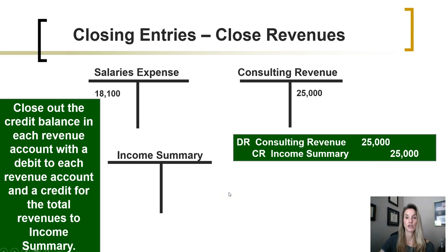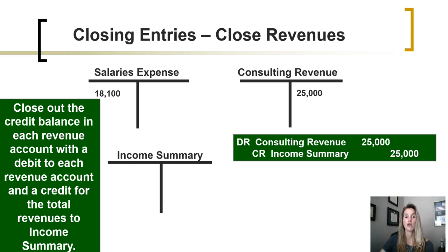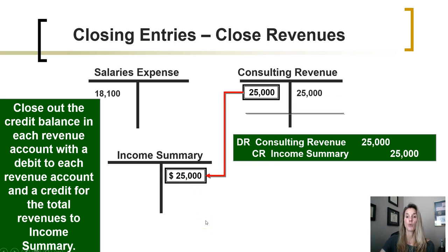The first closing entry is going to close out the revenue accounts. We have one revenue account with a credit balance of 25,000. If we want to transfer and close that balance out — to get rid of that credit balance — we would debit the revenue account. So our first closing entry will debit the consulting revenue account for 25,000, and it will transfer that balance to the income summary account. This income summary account is only used during the closing process to summarize income as we're closing out revenues and expenses. So we credit, or transfer, that balance out of revenues and into income summary, leaving the revenue account balance at zero.